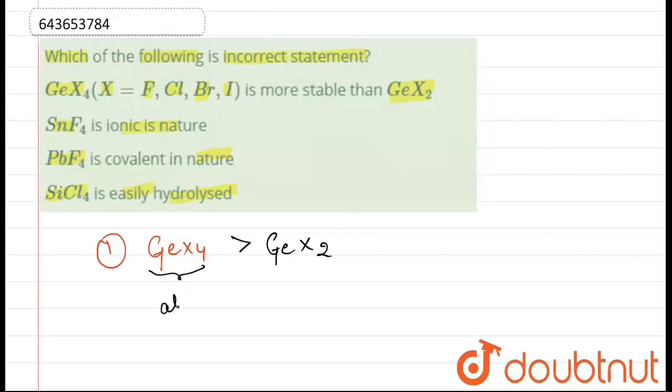as if we look at GeX4, so all orbitals, all orbitals are fully filled here. So what we know, we know that full filled and half filled orbitals are more stable. So GeX4 is more stable than GeX2. So this statement is correct. We have to find incorrect statement.